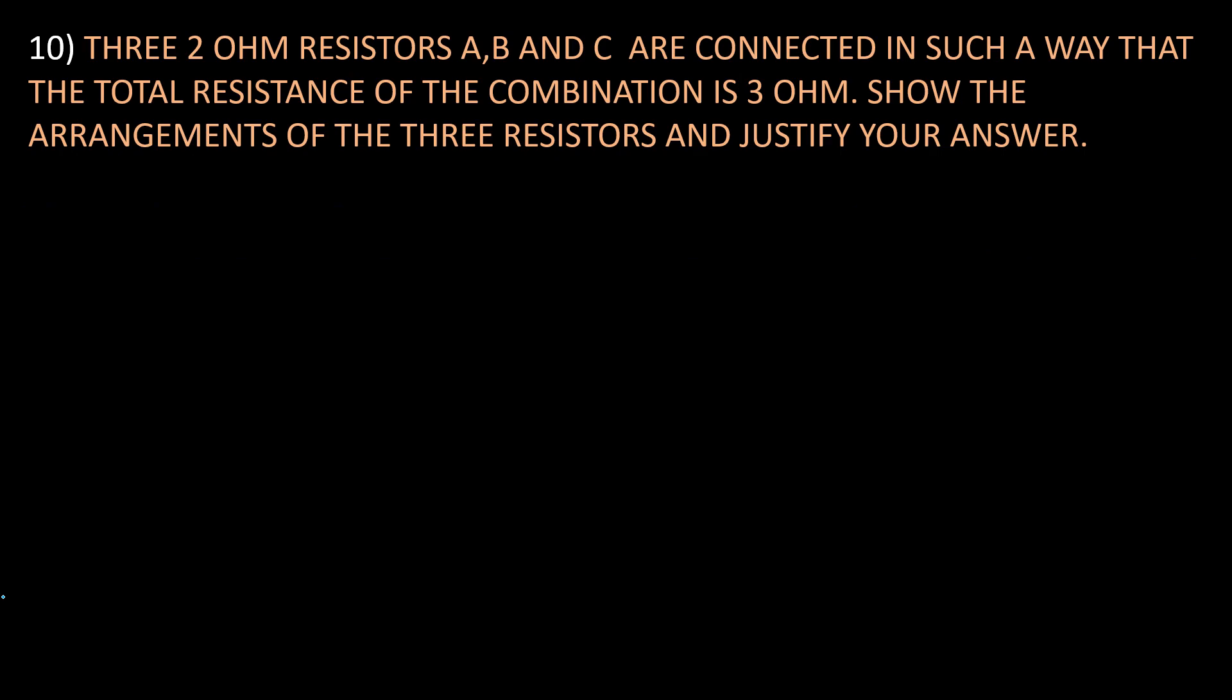That is a problem. So here three 2 ohm resistors A, B and C are connected in such a way that the total resistance of the combination is 3 ohm. Show the arrangement of the three resistors and justify your answer. So we have to do this problem.